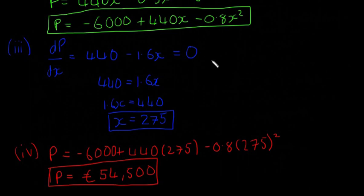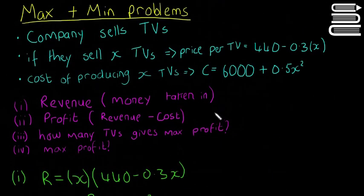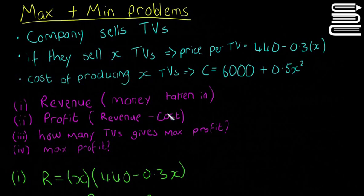Okay, so I think these ones with money are a little bit easier, but it's sometimes a little bit confusing if you haven't done business or anything for the Leaving Cert or Junior Cert. So we'll go through it one more time. The revenue is the money you take in, the profit is going to be your revenue minus your cost, and how many TVs gives you maximum profit, you're going to have to differentiate it.